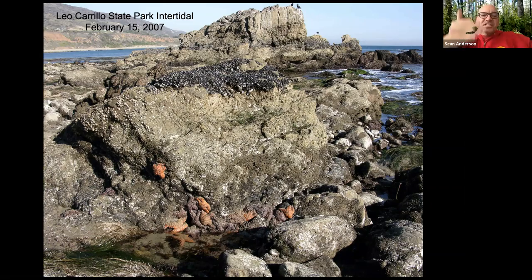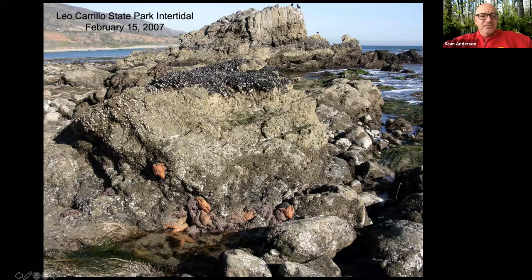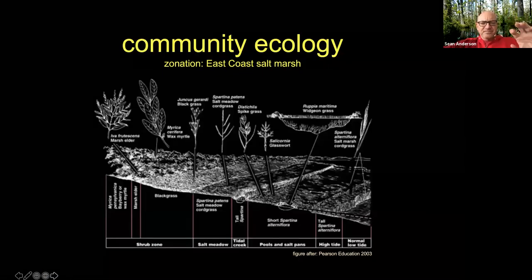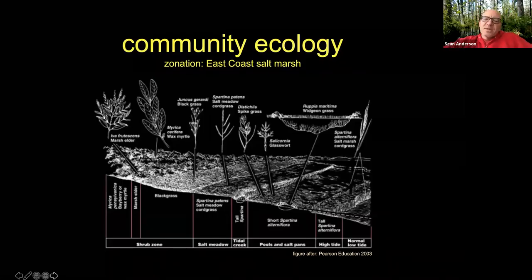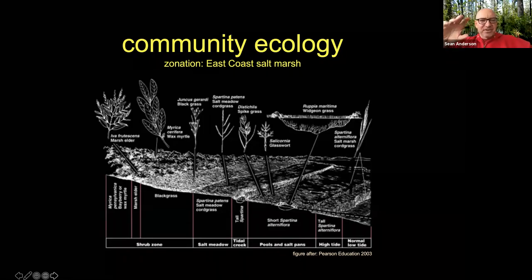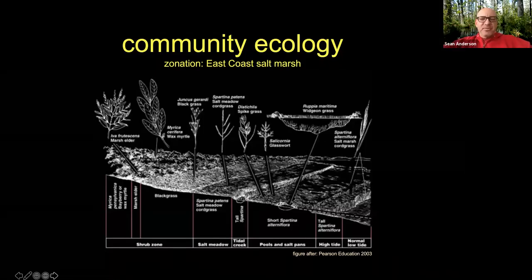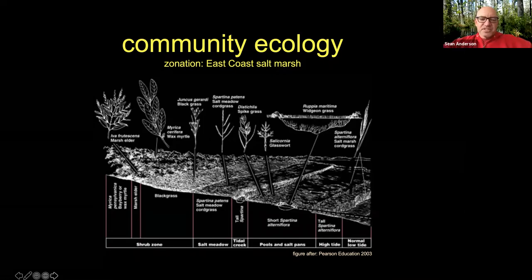Simplified systems are really helpful for understanding what's going on, particularly when we're just getting into a system. That's zonation. We'll see zonation play out in many different ways in our wetlands and it has multiple implications for restoration. This next example — from an East Coast salt marsh — shows the same principles apply in whatever system we're talking about.